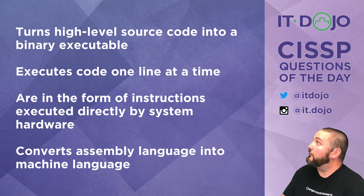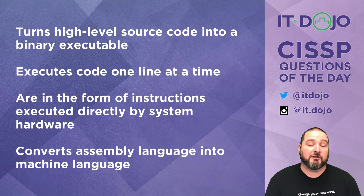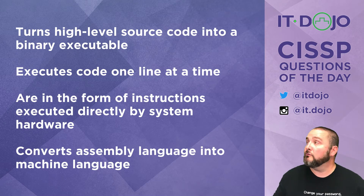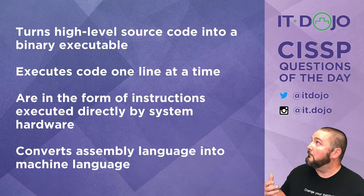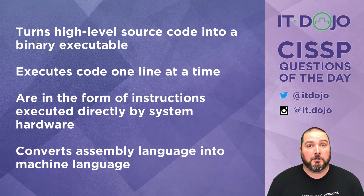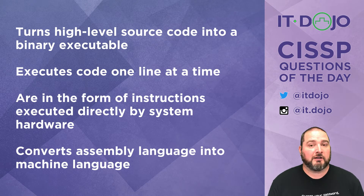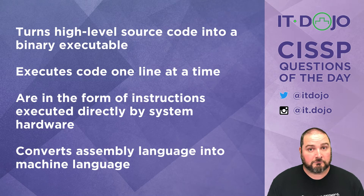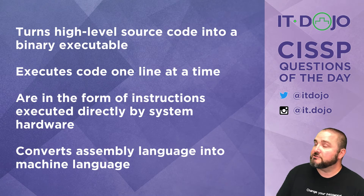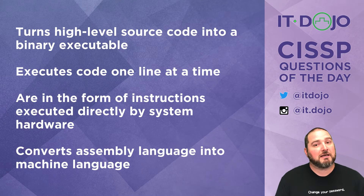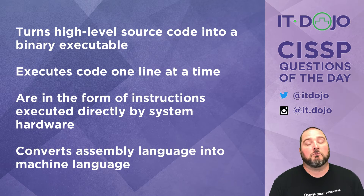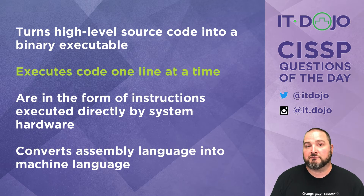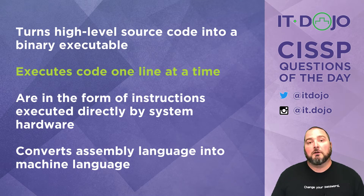The first answer choice says that it turns high-level languages into executable binary code. No, that is what a compiler does, not an interpreter, so that's not the right answer. The next answer choice says that it executes instructions one line at a time, and that is absolutely one of the characteristics of interpreted languages, so an interpreter does do that — that's the right answer.